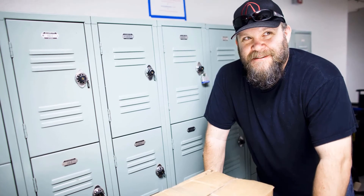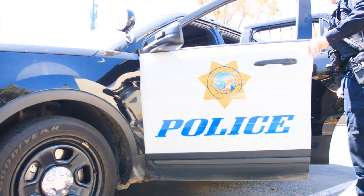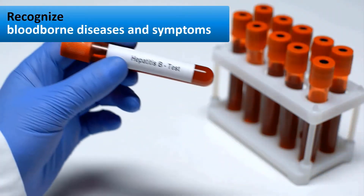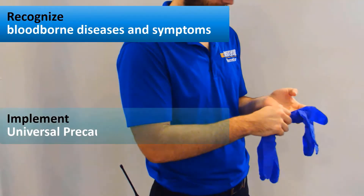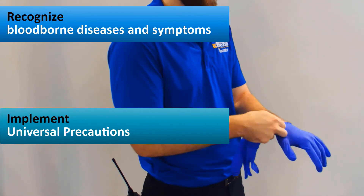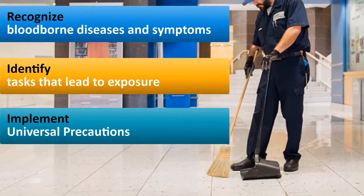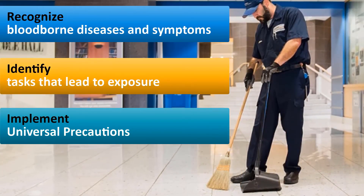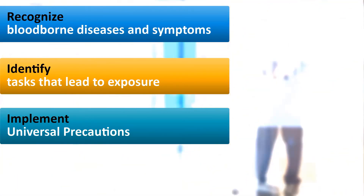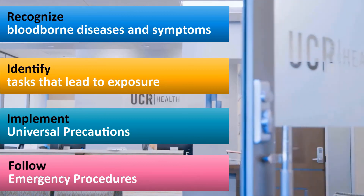Remember, there are steps you can take to protect yourself from injury or illness associated with bloodborne pathogens: recognize bloodborne diseases and symptoms, use universal precautions in situations with bloodborne pathogens, properly dispose of pathogen waste, used PPE, contaminated clothing, and sharp objects, and seek medical treatment and report all suspected exposures.